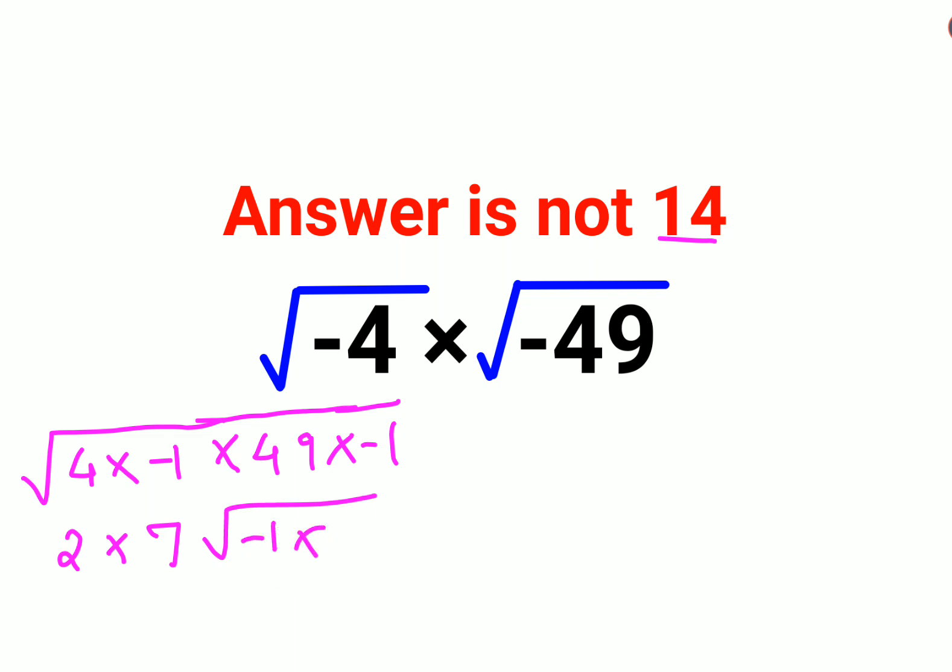And in mathematics we know that negative×negative will always get you a positive. So therefore this will become 2×7×√1, that comes out to be just 2×7 equals 14.